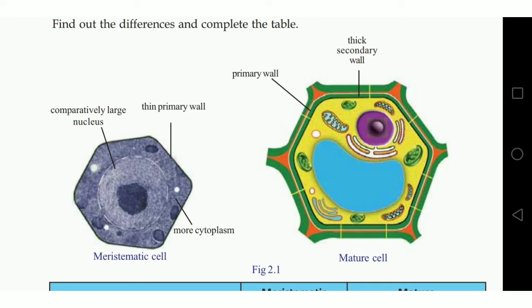In meristematic cell, nucleus is large, but in mature cell, nucleus is small.